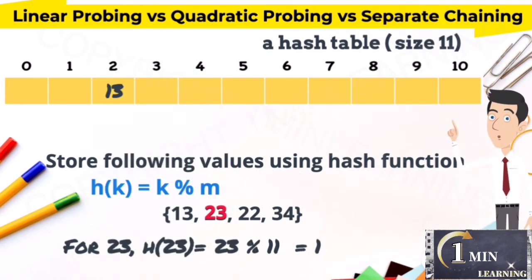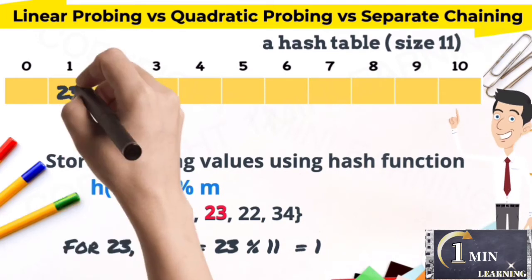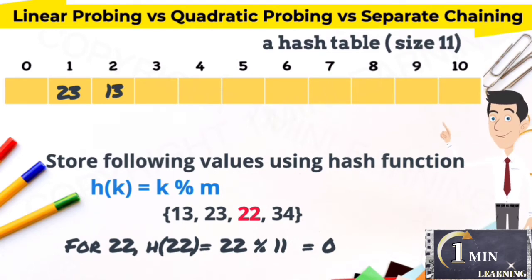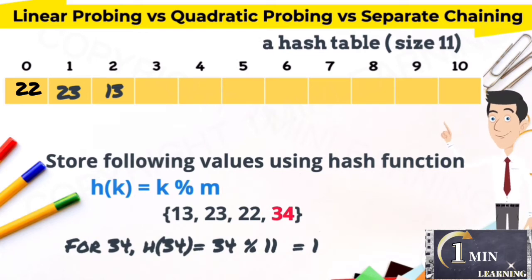23 in index 1, 22 in index 0. For 34, it's supposed to store at index 1. There is a collision.